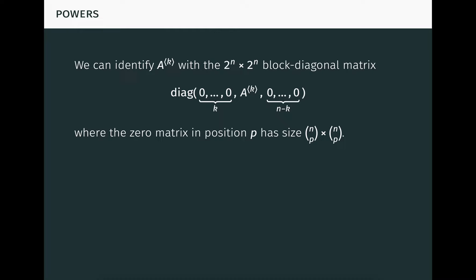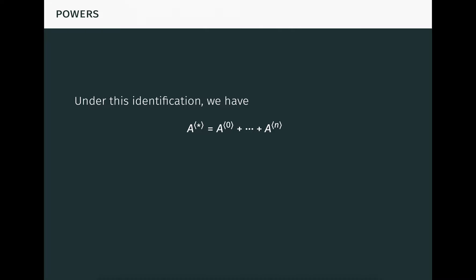Continuing with the compound theme, we can informally identify the k-th compound power of A with the 2 to the n by 2 to the n block diagonal matrix seen here, where the 0 matrix in position p has size n choose p by n choose p. Again, for convenience, we're counting block positions starting at 0 instead of 1. As an example, we can informally identify the 2 by 2 matrix seen on the left here with the 4 by 4 matrix on the right. Under this identification, we have that the compound matrix of A is just the sum of the compound powers of A, and the product of any two compound powers can be computed. All of the powers here are being viewed as 2 to the n by 2 to the n matrices. So we can make some sense of addition and multiplication of compound powers if we follow this convention.